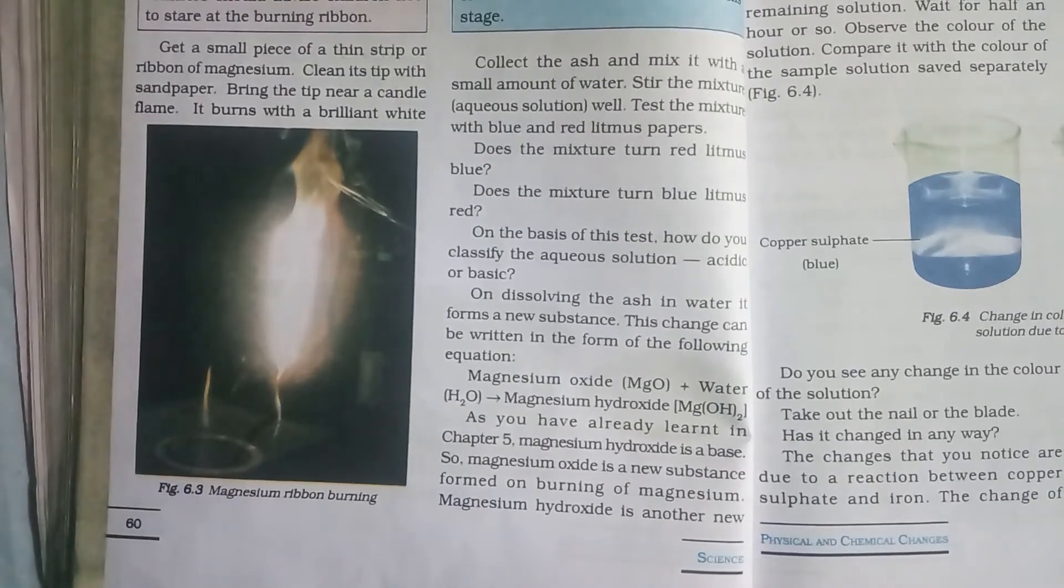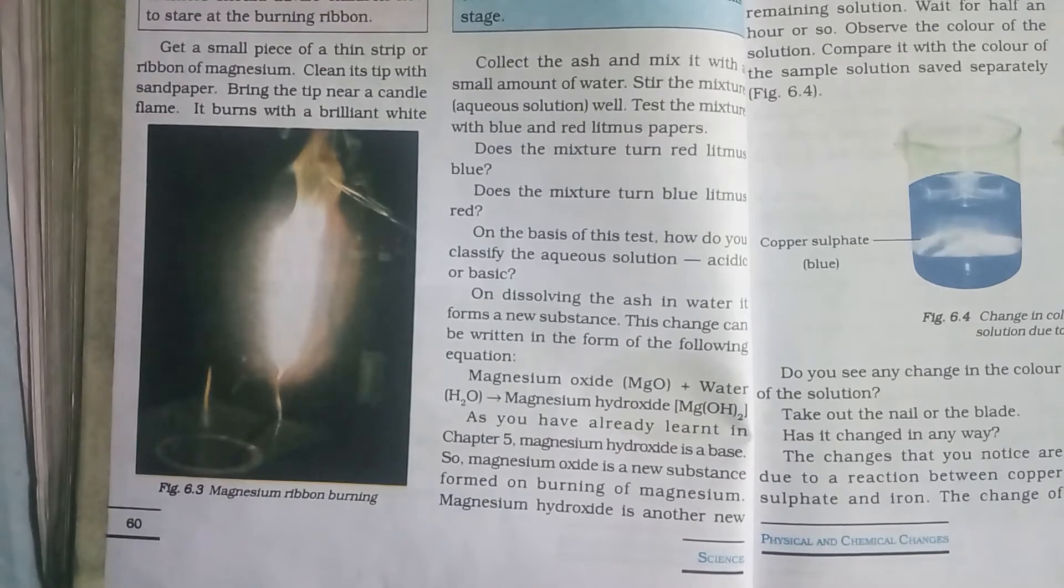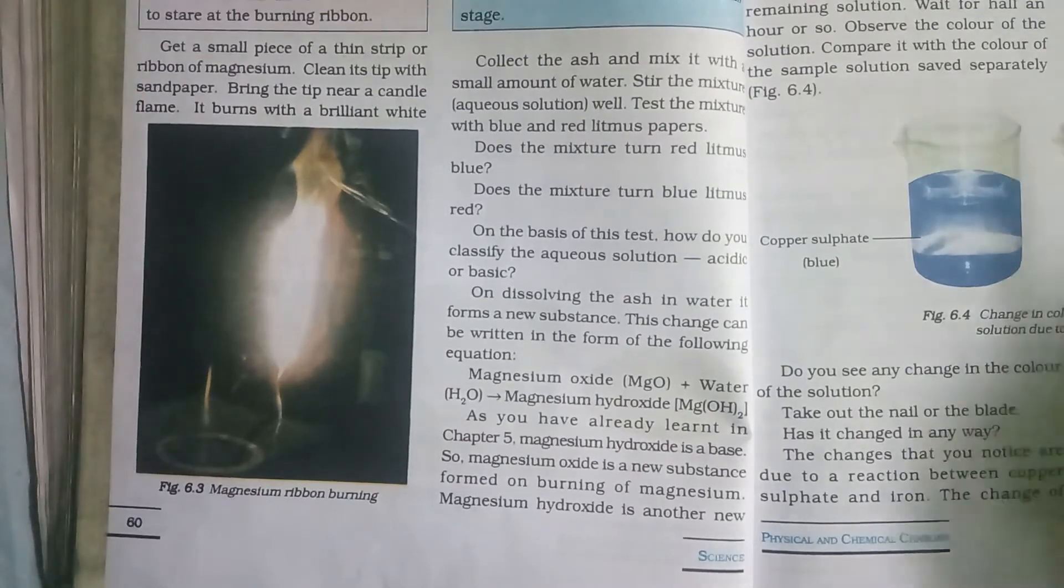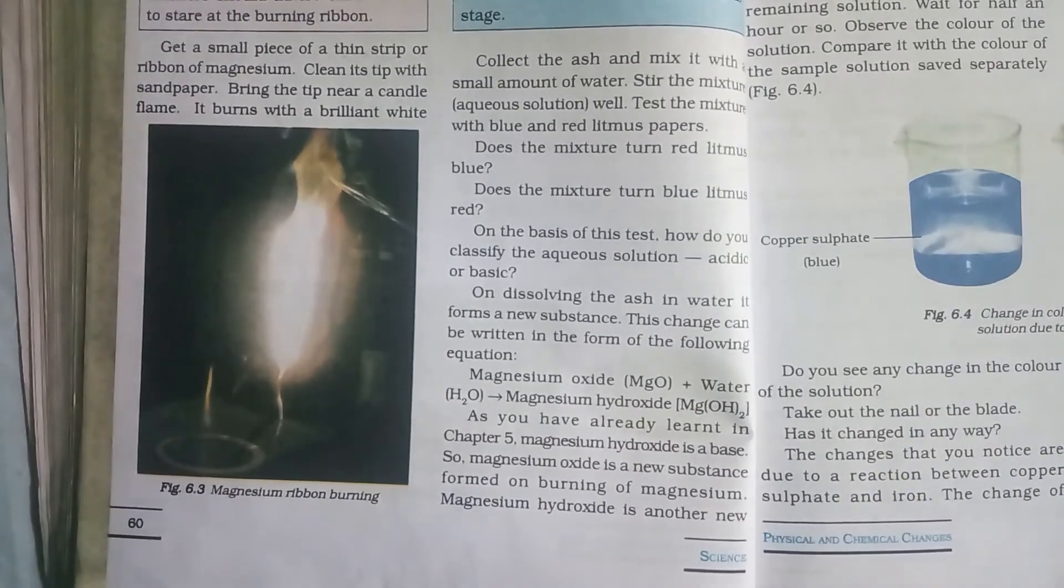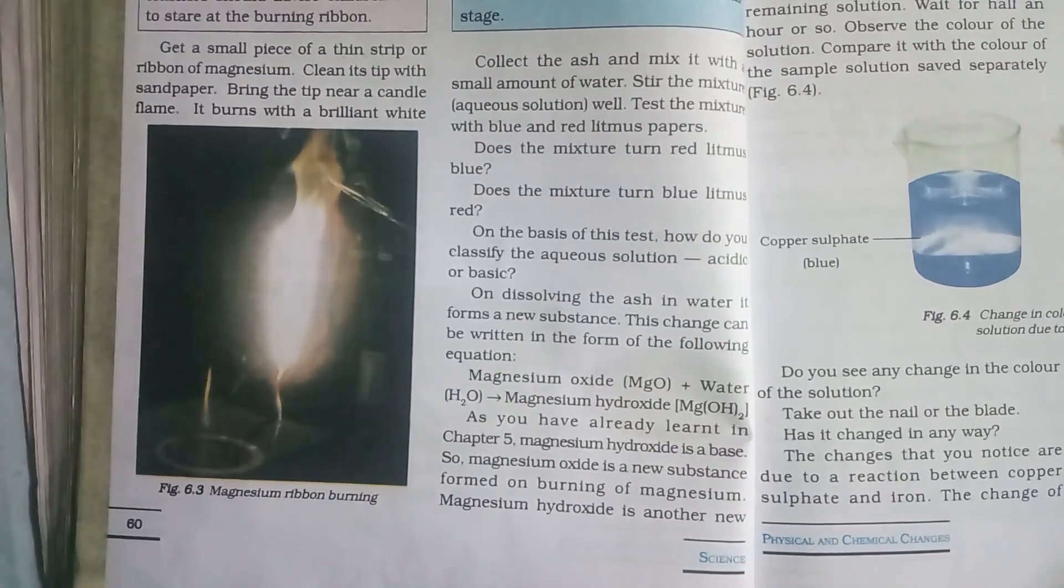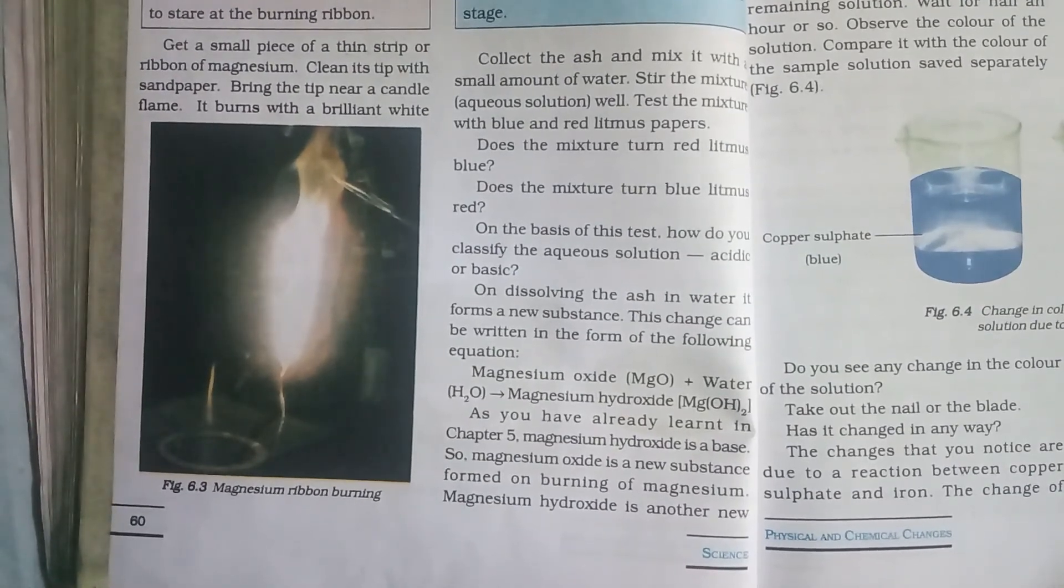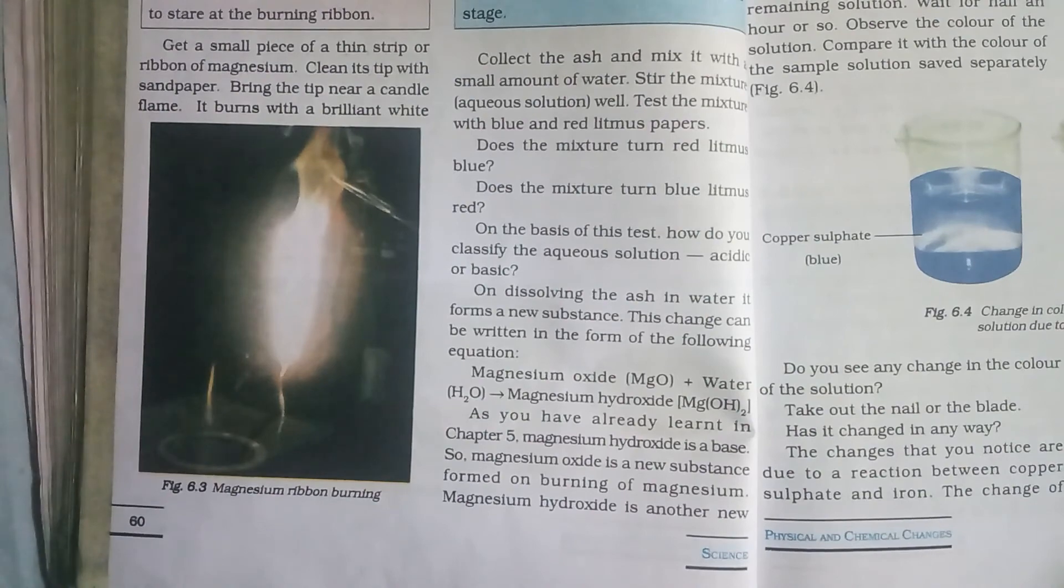Whenever substances undergo some changes they give rise to new substances. If a new substance is formed then we call that change a chemical change. In the coming classes children, let us see some more examples related to chemical changes. Thank you.